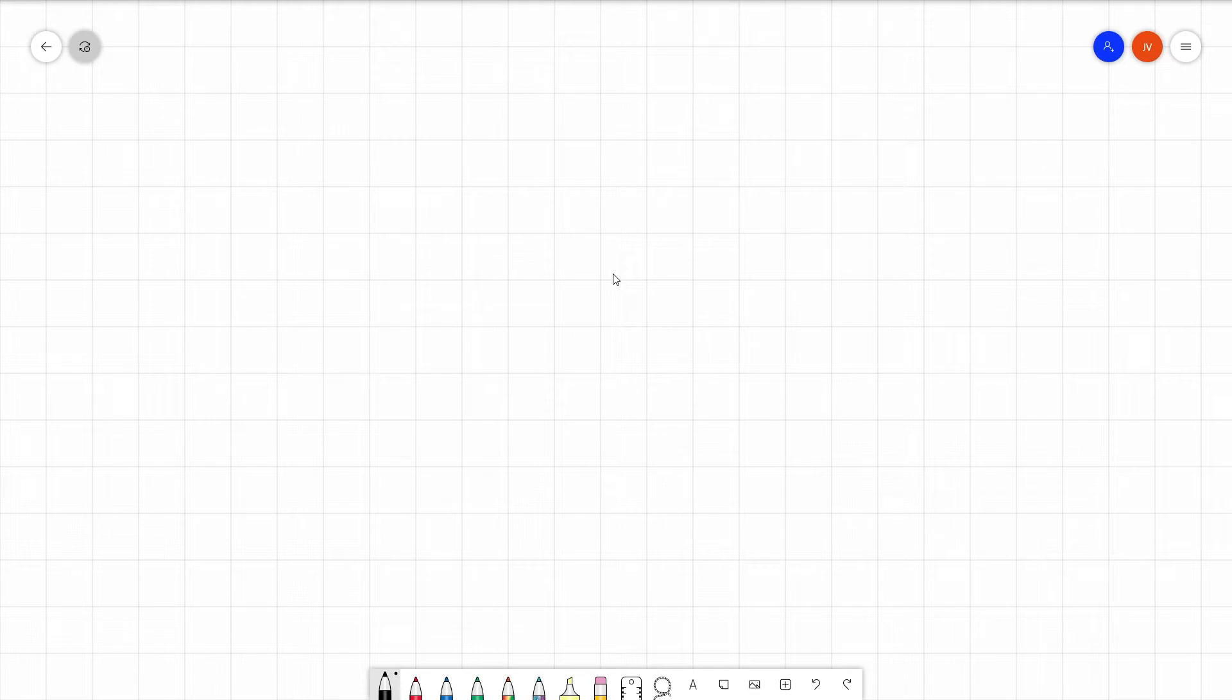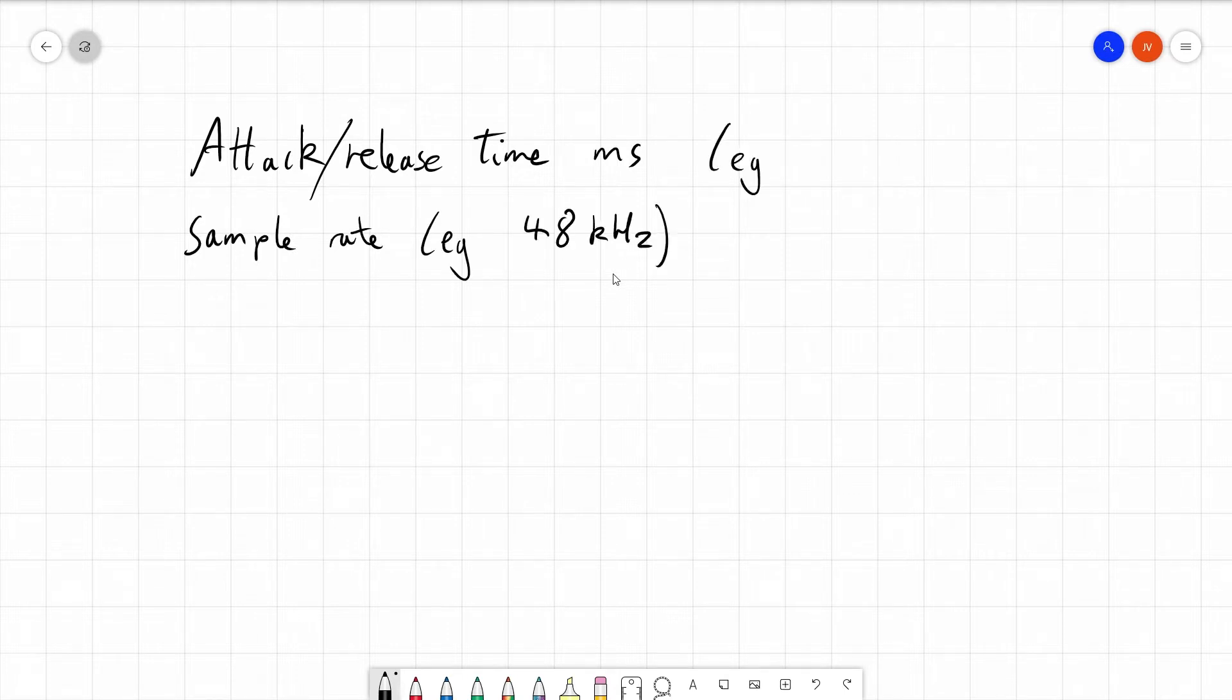So what we do first is we take the attack time, but it could be release time, so attack or release in milliseconds, and then we take the sample rate, so for example 48,000 hertz, and attack or release time example we could say 10 milliseconds, and then we combine these two things and we get what's called an alpha value, and typically this alpha value will be something like 0.9993 or something like that.